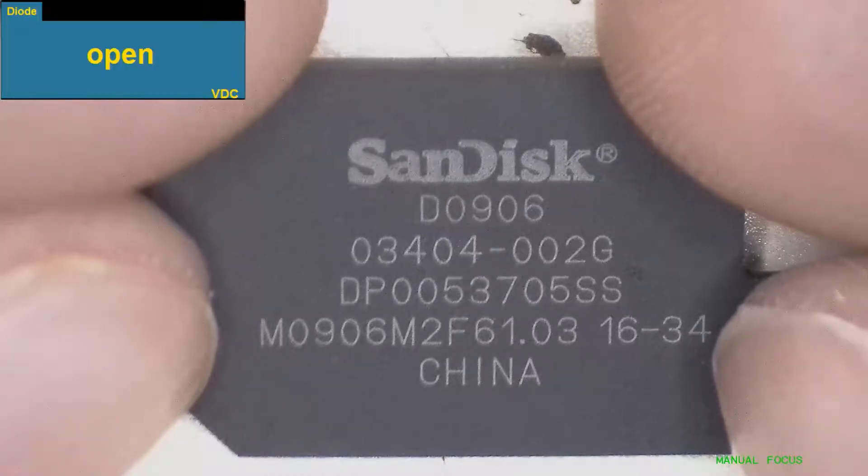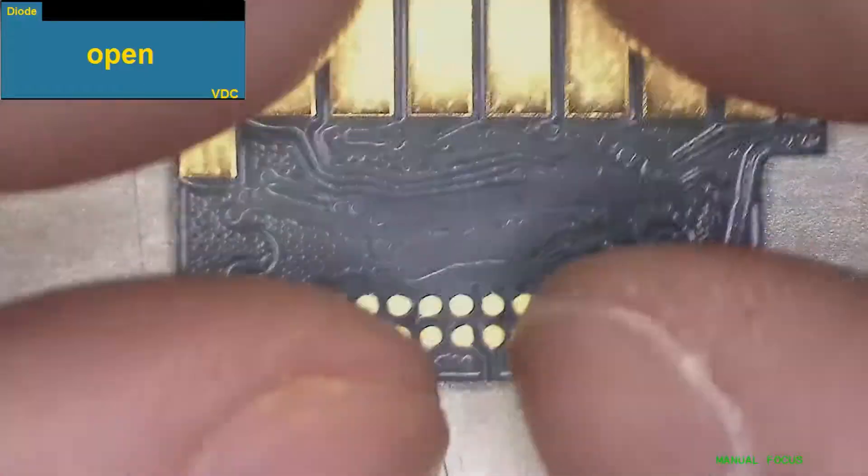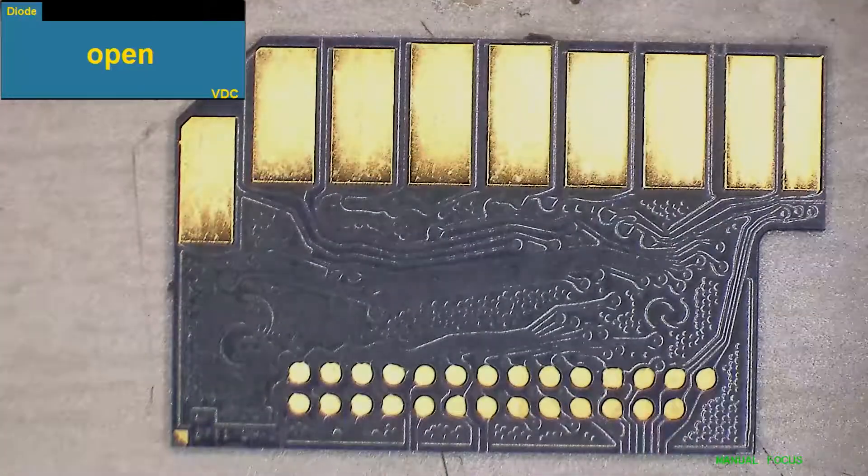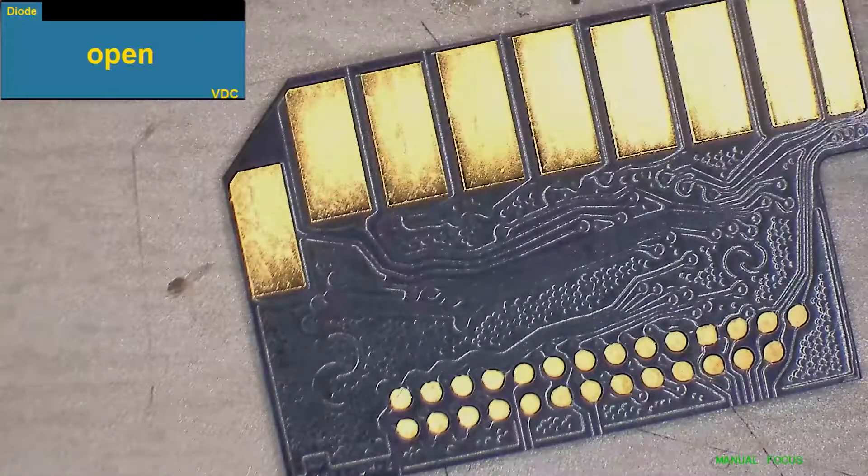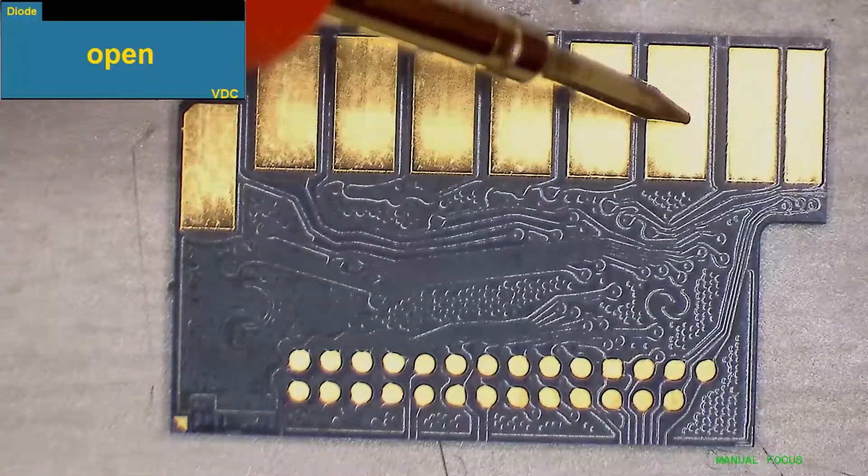I want to show you a quick way to tell if your monolithic SanDisk SD card is bad. Put your multimeter into diode mode and place the positive contact on ground.